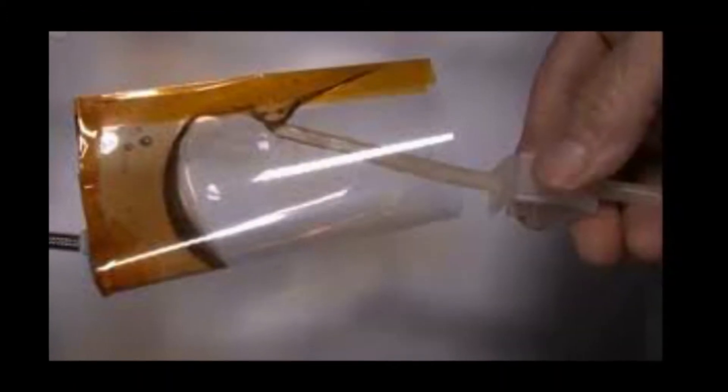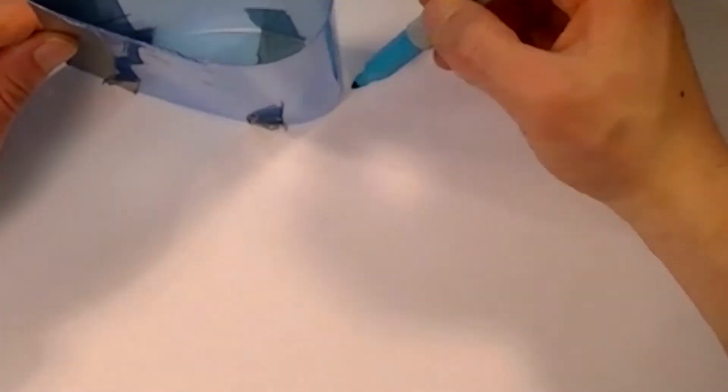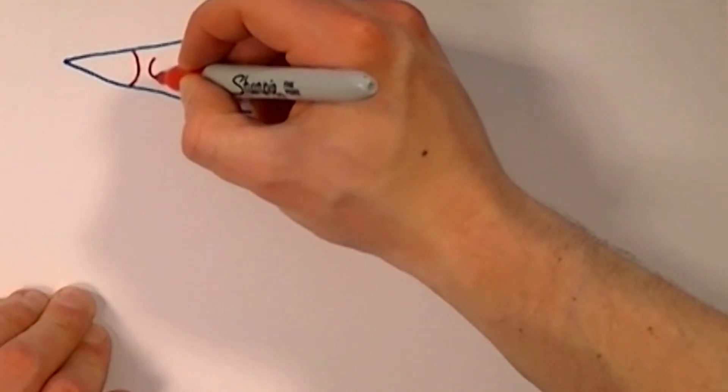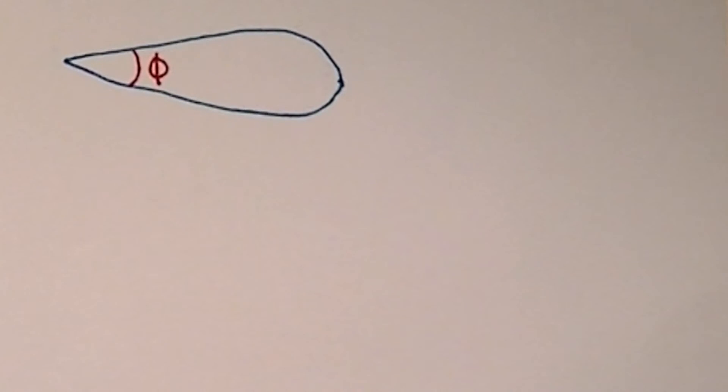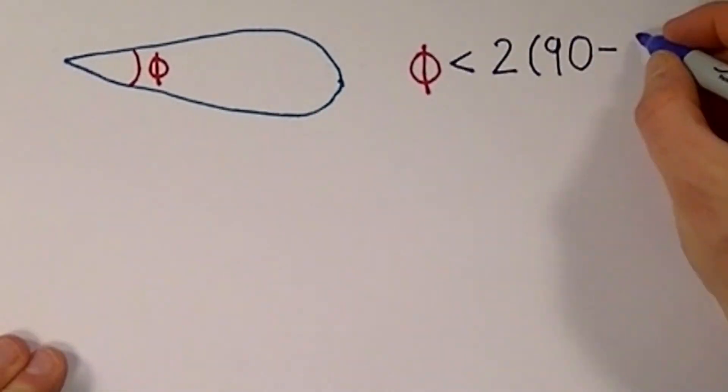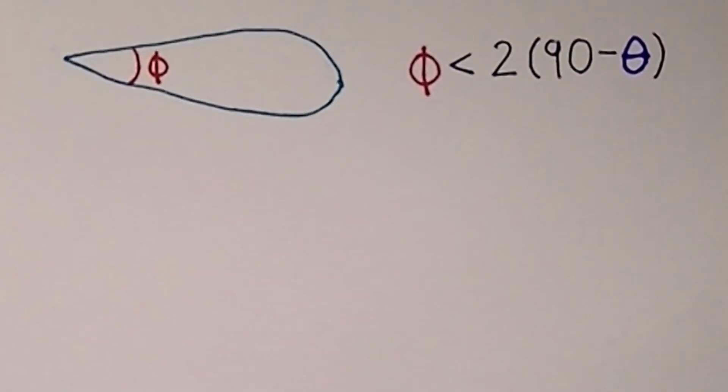The angle needed to achieve this effect can be found using a simple calculation. Assume that this is a cross-sectional view of the zero-gravity cup, and that the angle of the cup's narrow side is represented by the Greek letter phi. The value of phi needed to allow water to be wicked up the side of the cup can be expressed by the equation phi is less than two multiplied by 90 minus the contact wetting angle of water on plastic.